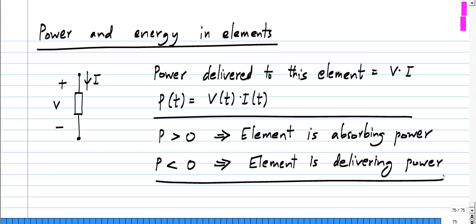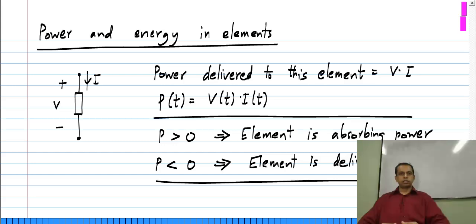That is about the definition of power in a two-terminal element. I have not derived this, but you can consider a charge that is flowing through the element from the upper terminal to the lower terminal. It goes through a certain potential drop, which means it loses a certain energy and some work is being done on it. The rate of change of work is the power, and from that we get the definition that power is voltage times current.